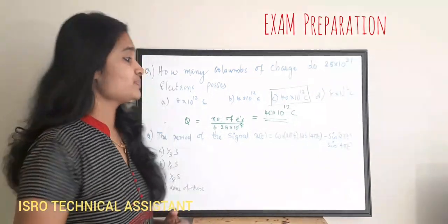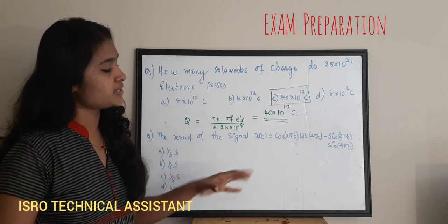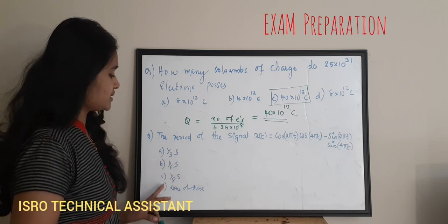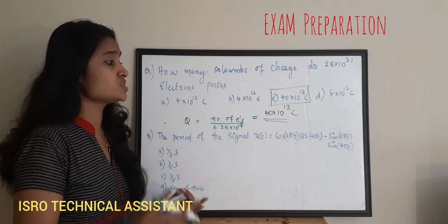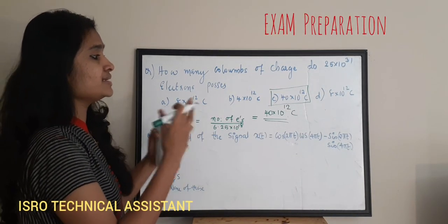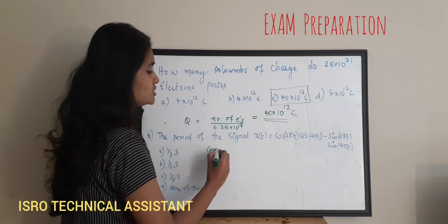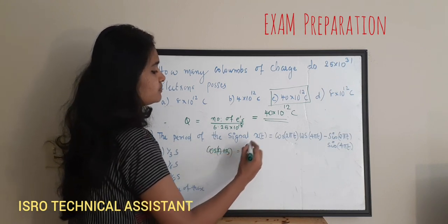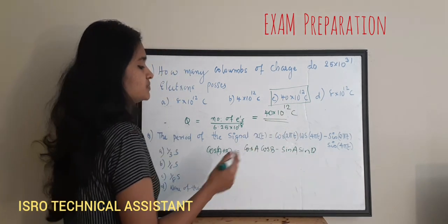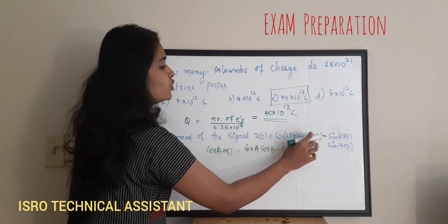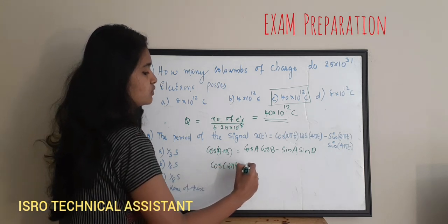The next question: the period of the signal x(t) = cos(2πt)·cos(4πt) − sin(2πt)·sin(4πt) is what? Options: A) 1/3 seconds, B) 1/6 seconds, C) 1/8 seconds, D) none of these. By looking at the question, it is clearly the expansion of a cosine term. The form cos(A)cos(B) − sin(A)sin(B) is present, which is the expansion of cos(A+B).